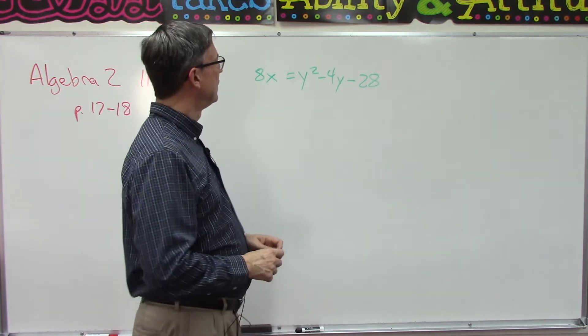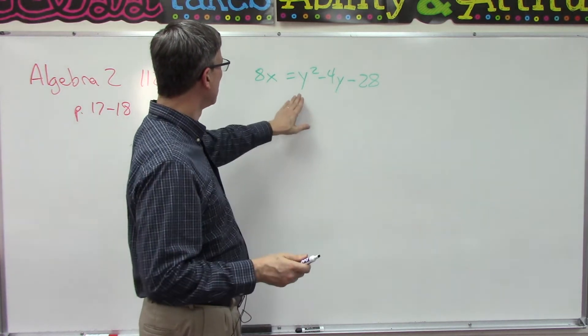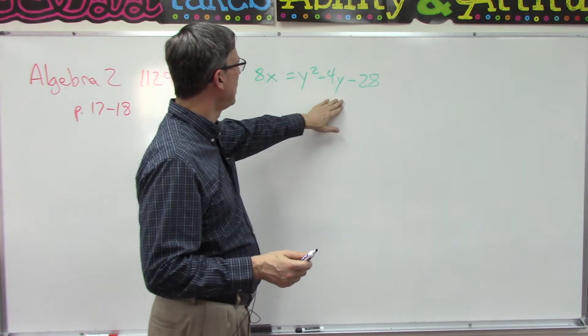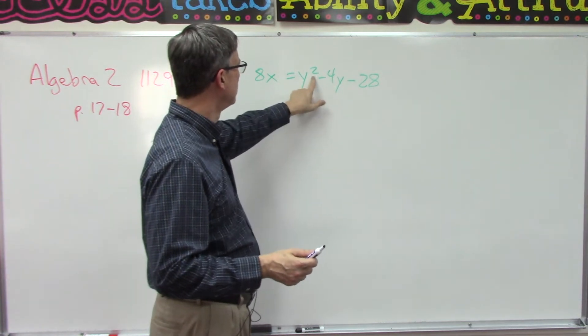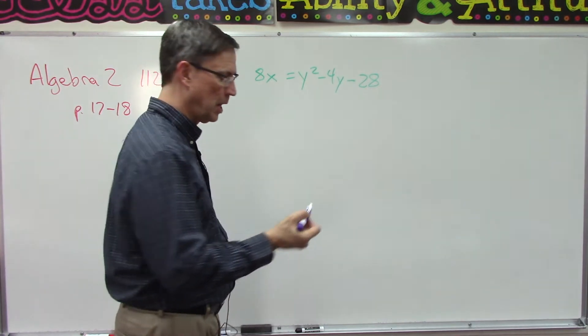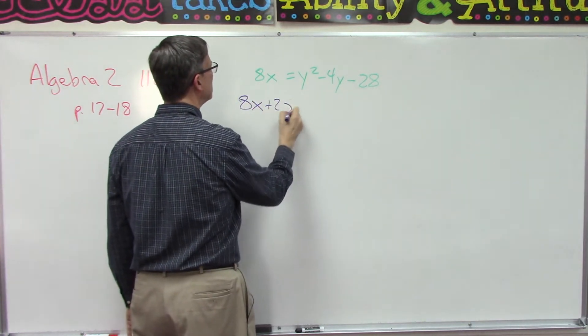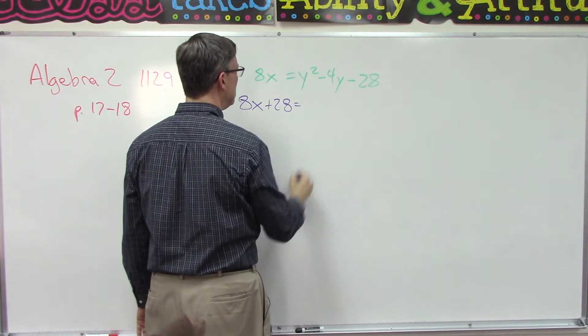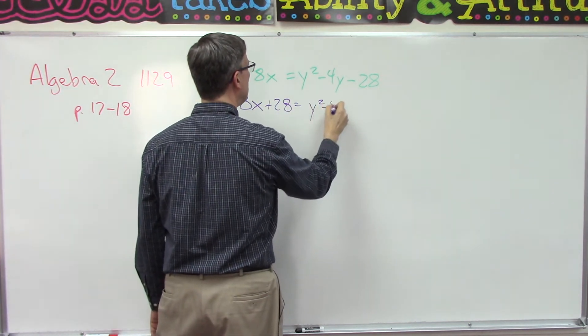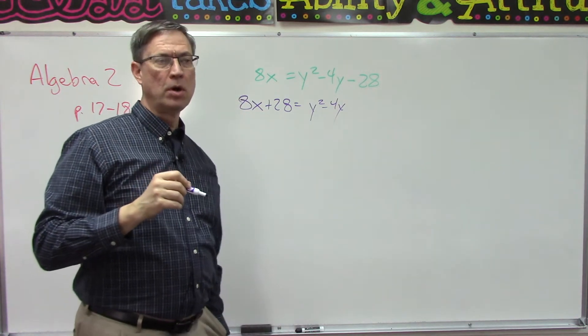But let's see what happens here. We have the y squared term, so we'll keep the y on the same side as the squared term. And I'm going to bring the 28 over here to the other side, so this will become 8x plus 28 equals y squared minus 4y. Now in completing the square, we always take